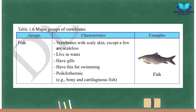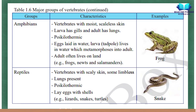Table 1.6 — Major Groups of Vertebrates. Fish: vertebrates with scaly skin (except a few scaleless); live in water; have gills; have fins for swimming; poikilothermic; examples: bony and cartilaginous fish. Amphibians: vertebrates with moist, scaleless skin; larvae have gills and adults have lungs; poikilothermic; eggs laid in water, larva (tadpole) lives in water which metamorphoses into adult; adult often lives on land; examples: frogs, newts, and salamanders.